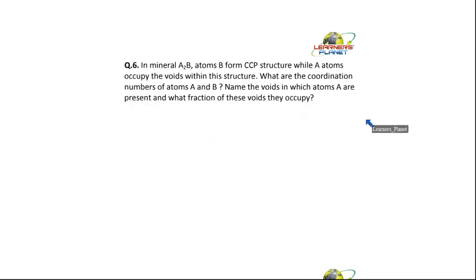Now this question has been a bit complicated. Why? It has been a bit twisted. It is just like the first question. But the twist here, students, is that the type of void is not given over here. Now see, what is the formula of the compound? It is A₂B.